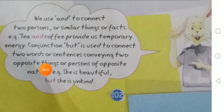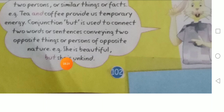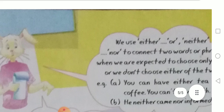But is used to connect two words or sentences conveying two opposite things and persons of opposite nature. But ऐसा conjunction है जो opposite nature बताने के लिए इस्तेमाल होता है — जैसे एक इंसान हमेशा खुश रहता है और एक हमेशा उदास रहता है। For example: She is beautiful but she is unkind. वो खूबसूरत तो है मगर दयालू नहीं है। एक ही इंसान की दो nature बताने के लिए भी 'but' का इस्तेमाल होता है।